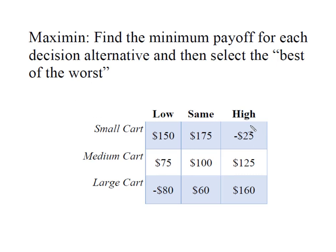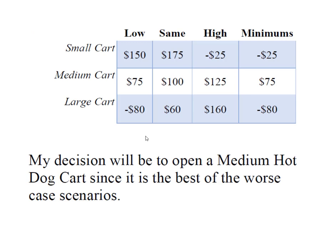My worst case scenarios are: for the small cart, I'm going to lose $25; for the medium cart, my lowest payoff is $75; and for the large cart, my lowest payoff is negative $80. So here are my minimums: negative $25 for the small, $75 for the medium, and negative $80 for the large. I'm going to pick the best of the worst. Under a maxi min criteria, my decision will be to open a medium hot dog cart since it is the best of the worst case scenarios.